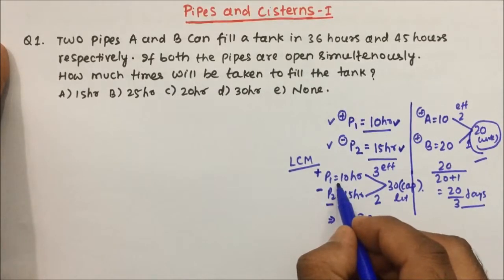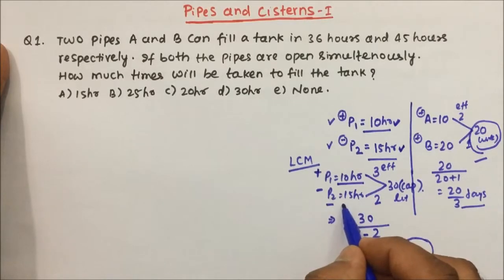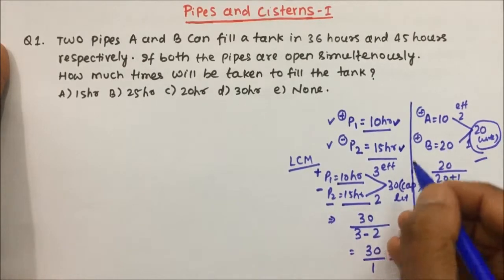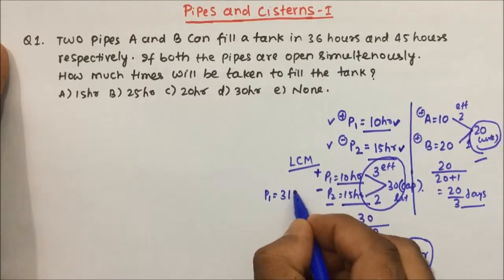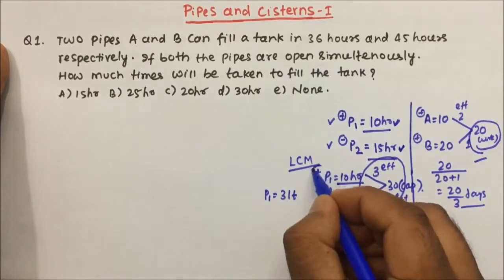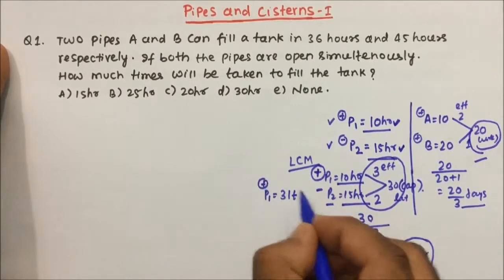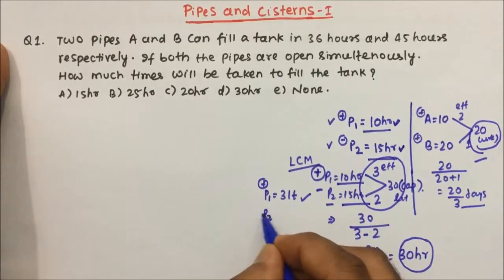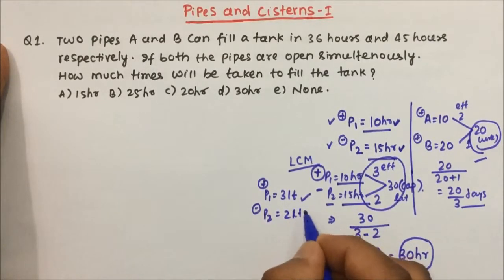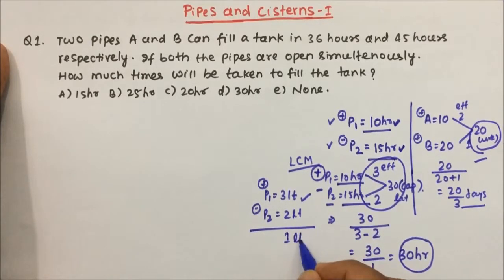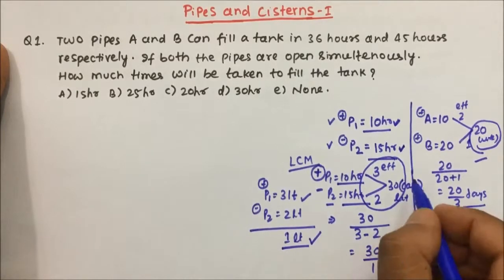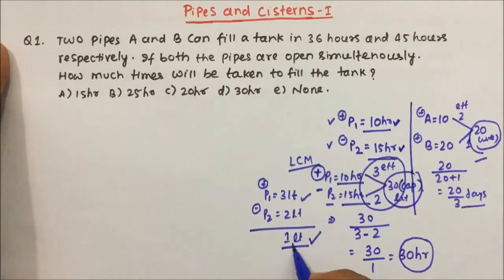Why? Because P1 fills the tank in 10 hours while P2 is removing water at 15 hours. Let us understand this by efficiency. P1 can fill 3 liters in 1 hour — that's positive work. P2 removes 2 liters in 1 hour. So finally, how many liters are getting filled per hour? 1 liter per hour. The total capacity of the tank is 30 liters, so it will take 30 hours to fill the tank.